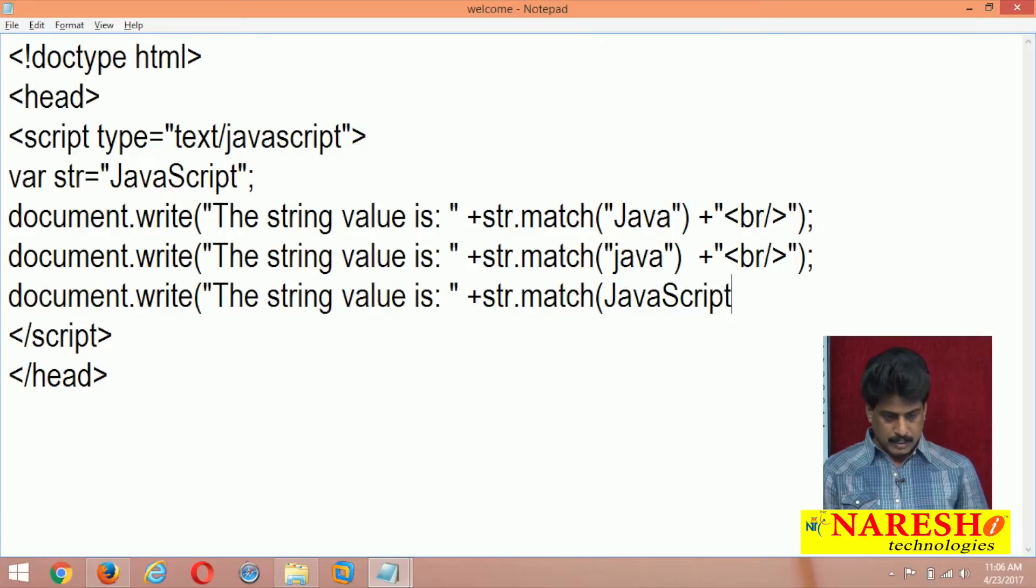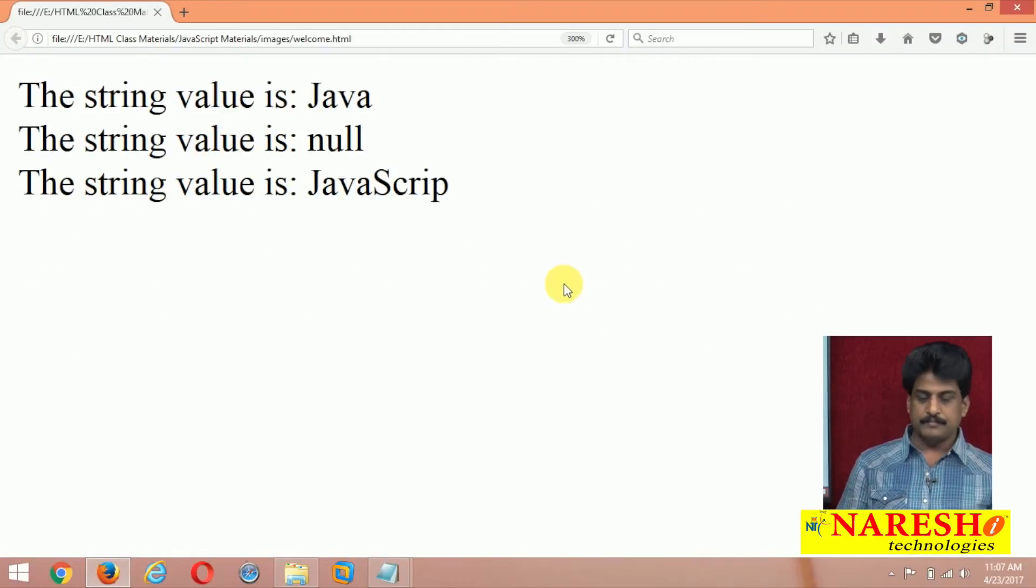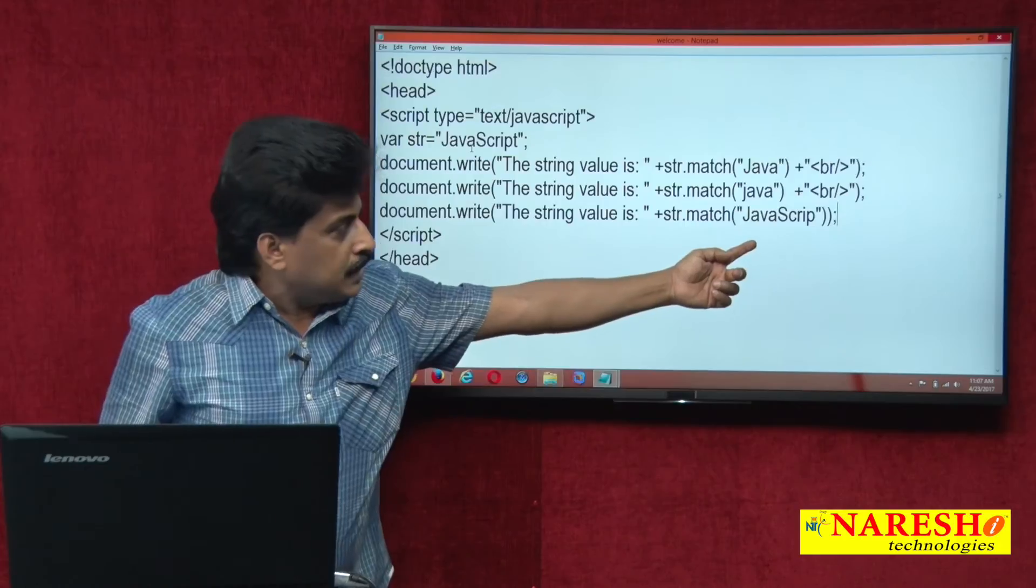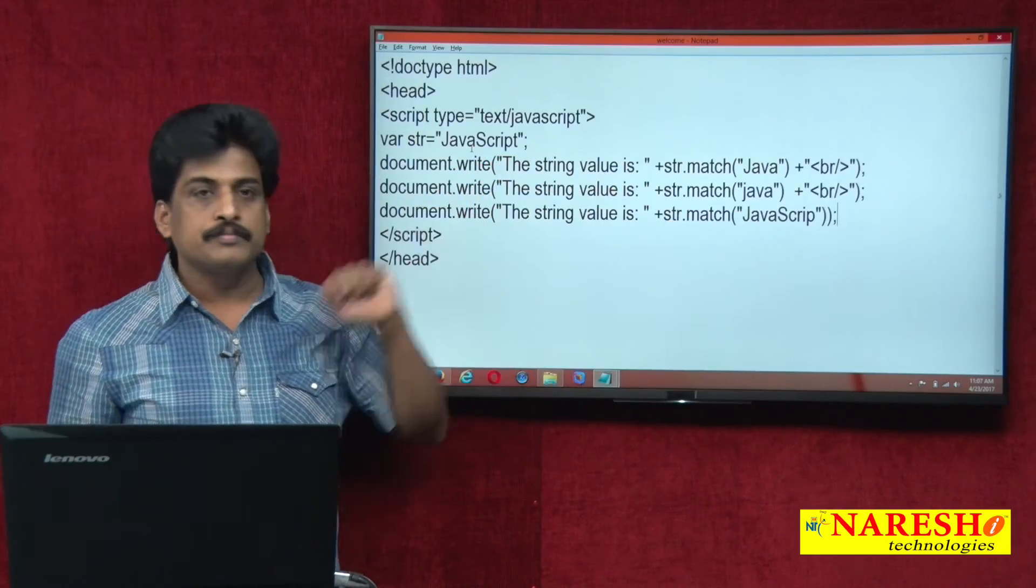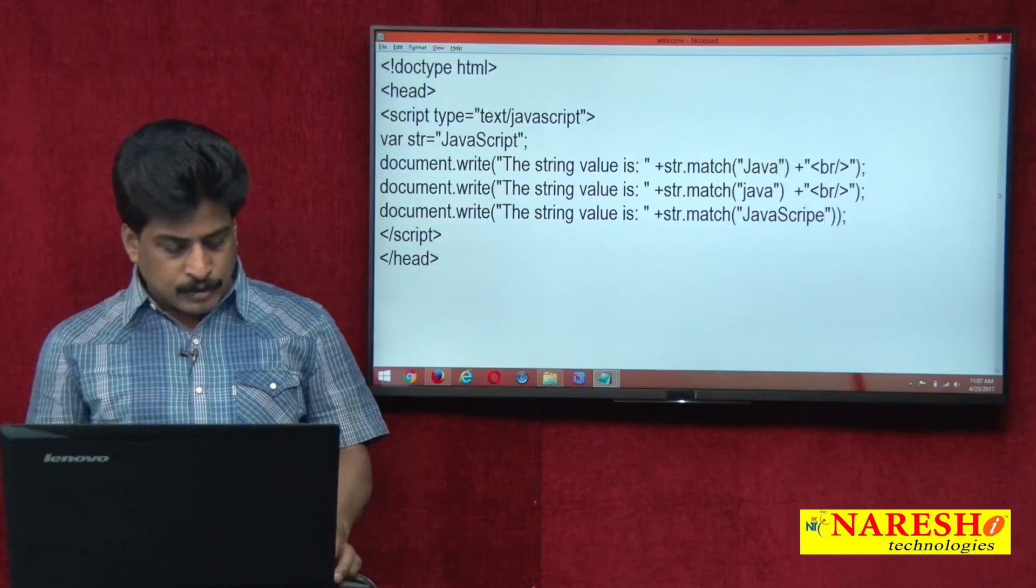JavaScript, javascript complete word, last t I am not giving. Right, string dot match, close that, again close, plus. So break tag does not require because after the statement no other statement existed. Now first one is Java, second one is null, third one is null or JavaScript? JavaScript. Now my expectation is JavaScript without t. Now here JavaScript completely existed, now t missing. Where it is matching? Matching up to p, same. Now p after if you are giving another value, not matching.